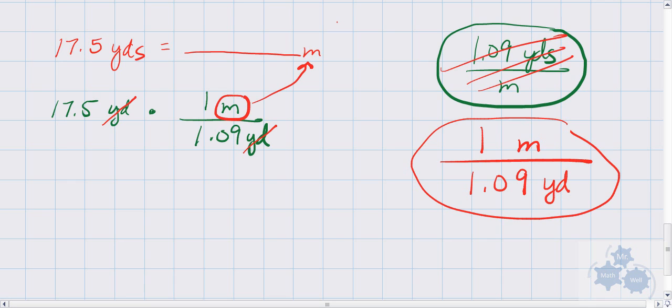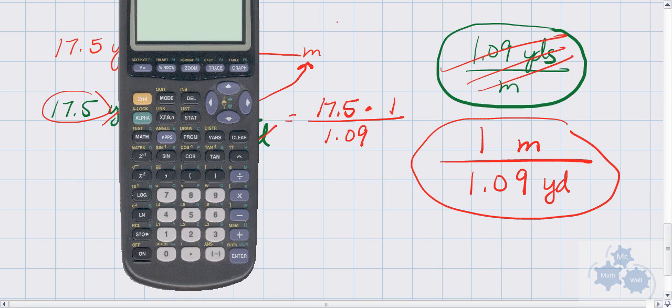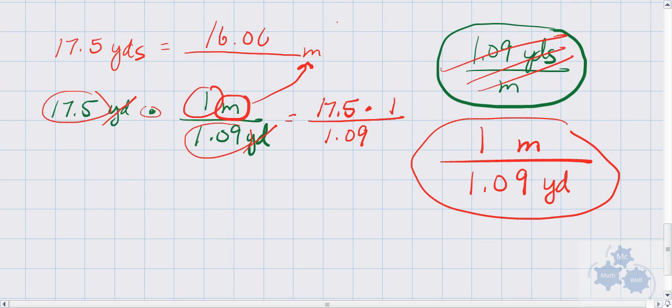And so what this tells us then is 17.5 times 1, that's this, times this, all divided by this number down here, 1.09. And when we do that all together, so 17.5 times 1, all divided by 1.09, we get 16.06. 16.06 meters, and there you have it.